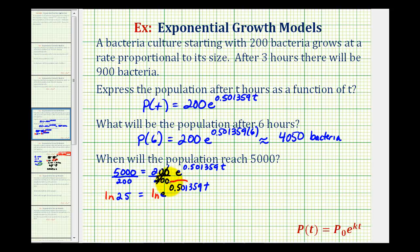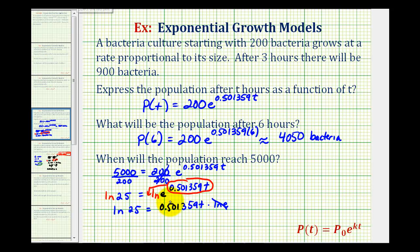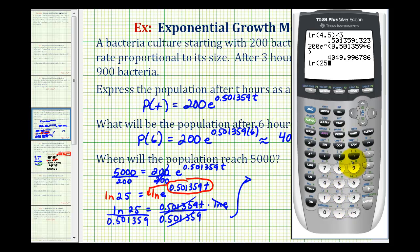We take the natural log of both sides and apply the power property of logarithms to move the exponent to the front, giving us: natural log of 25 equals 0.501359t times natural log of e. Since natural log of e equals one, we simplify to natural log of 25 equals 0.501359t. Dividing both sides by 0.501359, we get t equals natural log of 25 divided by 0.501359, which is approximately 6.42 hours.